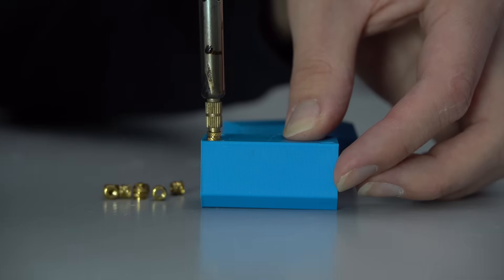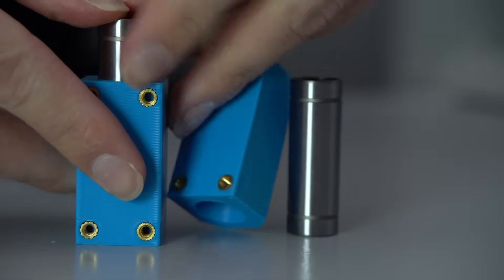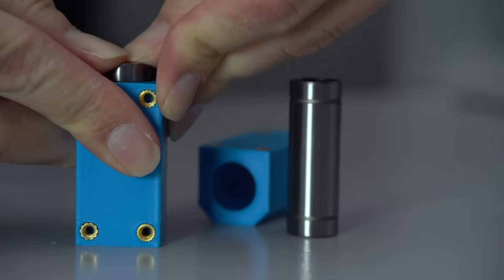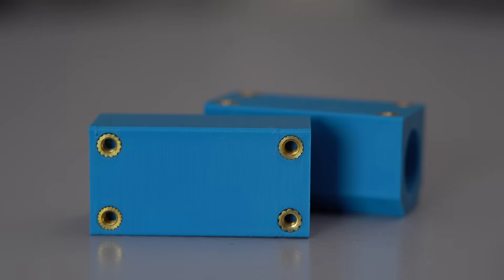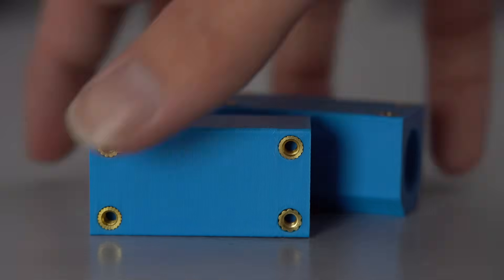The bearing mounts each need four heat set inserts installed, and then the bearings for the rods must be press fit inside of them. This is supposed to be a very tight fit, so don't be afraid to give the bearings some force when you're installing them.